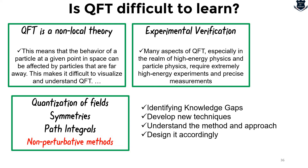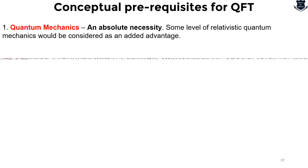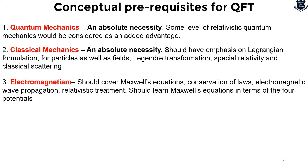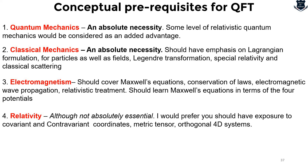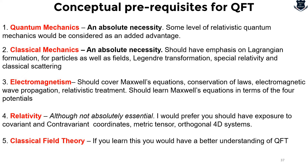What are the things we need to know? Absolute necessities: obviously quantum mechanics, classical mechanics, and electromagnetism covering Maxwell's equations. The fourth would be relativity — the special part. And last but not least, classical field theory. This is the most important thing which most students and books ignore. So coming up next: what are the conceptual prerequisites?